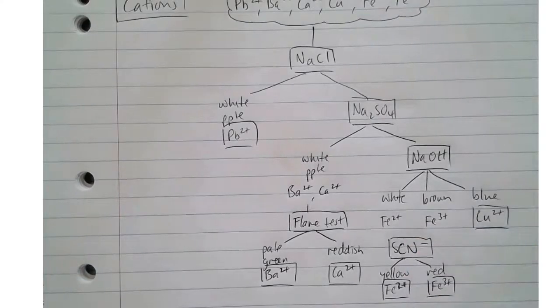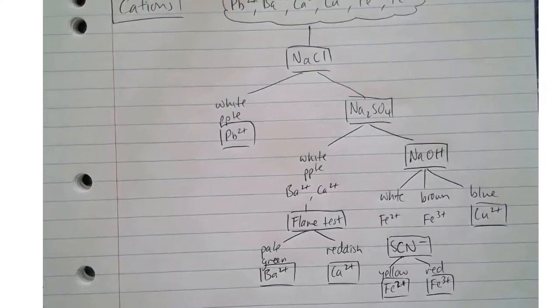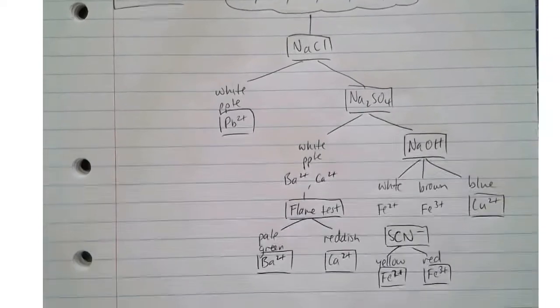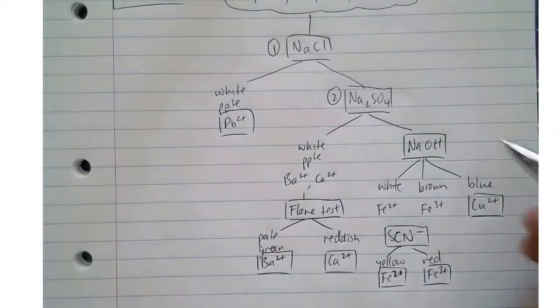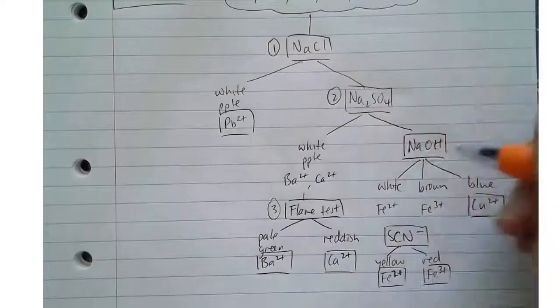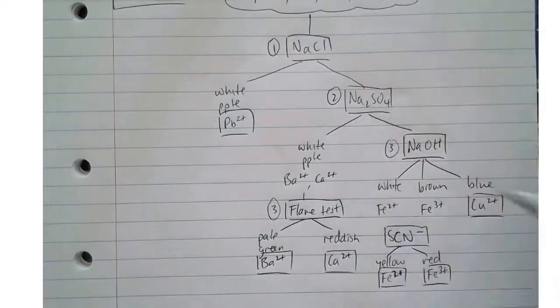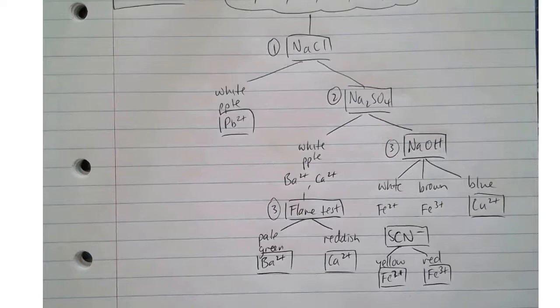There are additional confirmation tests we could do if we particularly wanted to, but these are kind of the bare minimum things that you would need to know. So sodium chloride, sodium sulphate, and then from there we would either do the flame test or the sodium hydroxide, depending on whether we got a precipitate or not.